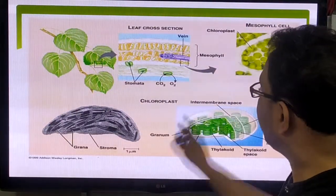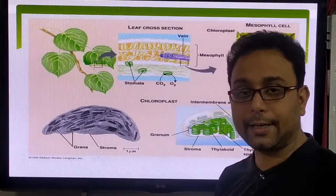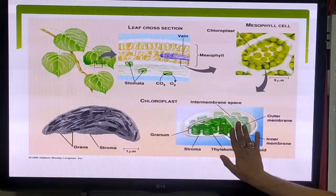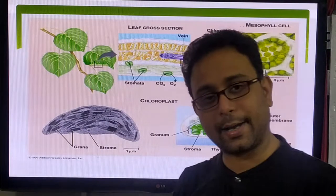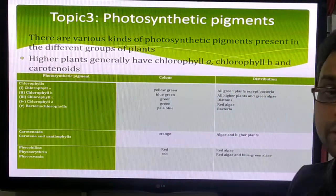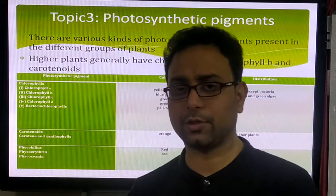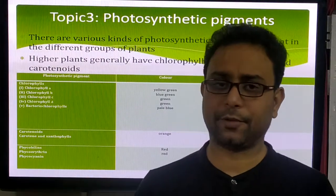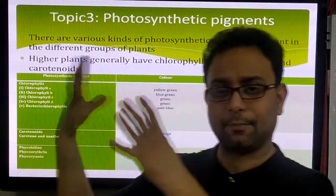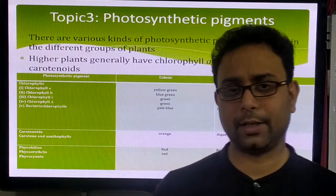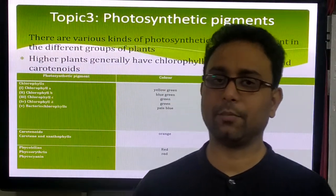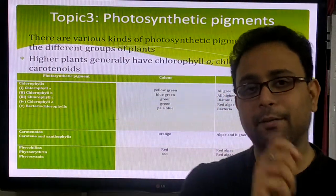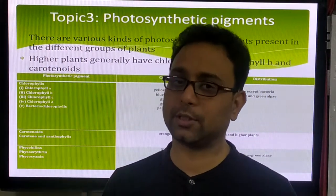Now, consider the leaf. Inside the leaf, the mesophyll cells are present. Inside the mesophyll cells, the chloroplast is there, with its stroma and grana structure. Different types of pigments are involved in photosynthesis — most commonly the chlorophyll pigments. Chlorophyll also has different types, such as chlorophyll A and chlorophyll B, which are discussed in higher classes. Another important pigment present is carotenoids, which also help in photosynthesis.